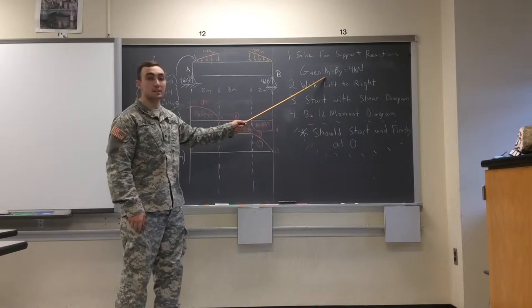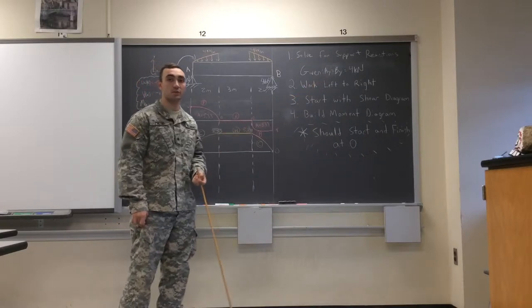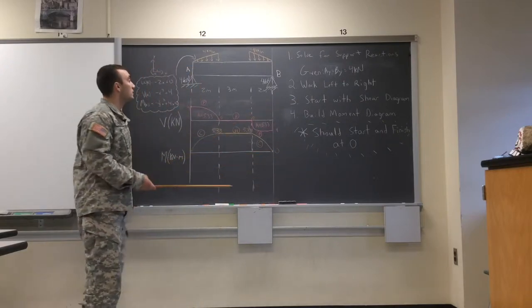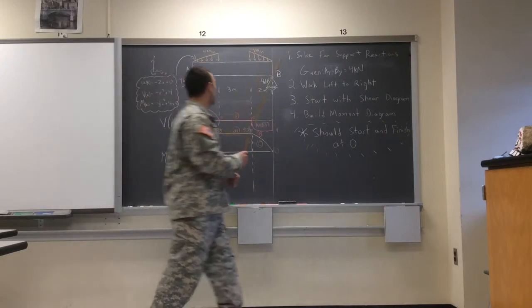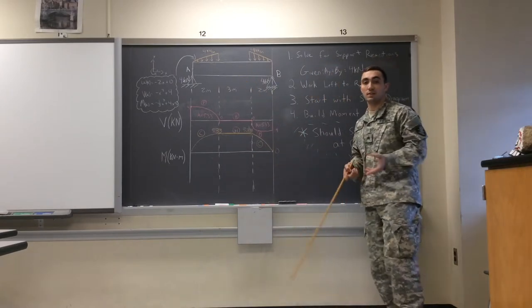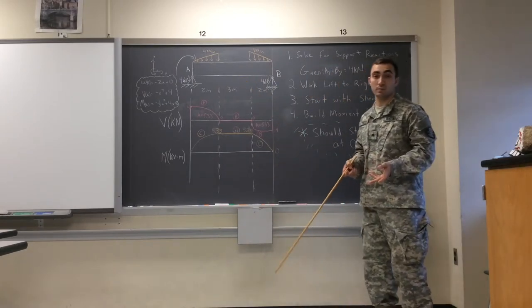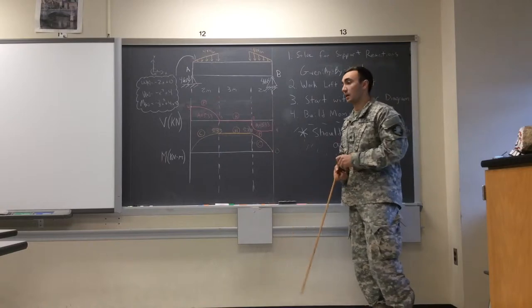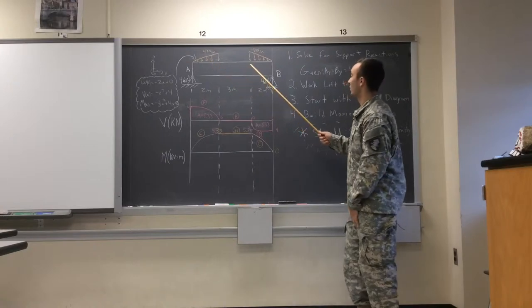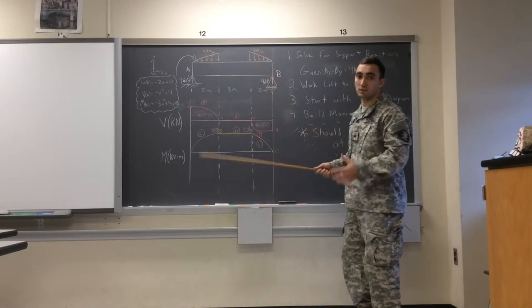We already solved these support reactions for you just for the sake of time. Here we have, we chose two ramp loads just because we figured the class would have the most issues with these ramp loads because they're the hardest to grasp. We got one ramp load that's increasing in the beginning. We got another one that does the opposite so we can show both sides.